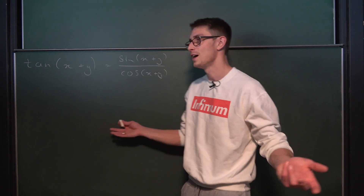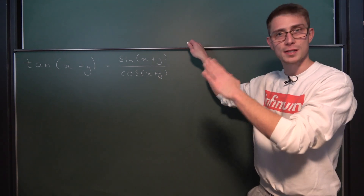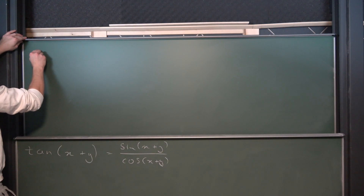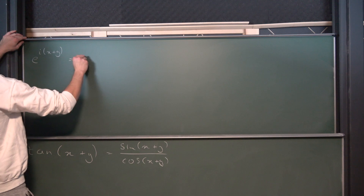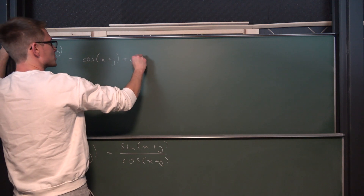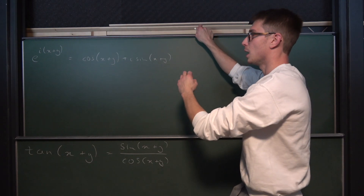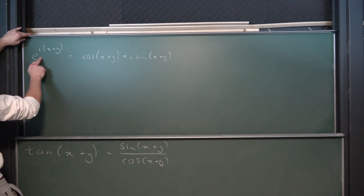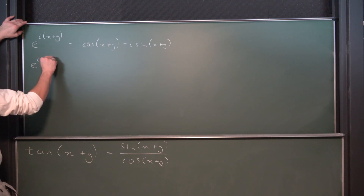Spoiler alert — it's going to be a nice expression, otherwise I wouldn't make the video. Now, just as a little reminder, how can you derive the sine and cosine addition formulae? Well, by using Euler. Namely, e to the i times (x plus y) is the same as the cosine of x plus y plus i times the sine of x plus y, by Euler's formula. Also, by the functional equation of the exponential function, that's the same as e to the ix times e to the iy.